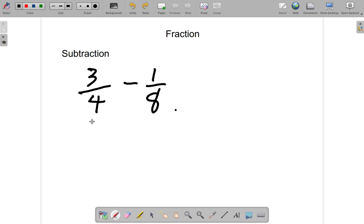So, just as we did with addition, we're going to turn the 4 into 8 by multiplying by 2 here. And we have to multiply by 2 up top as well.